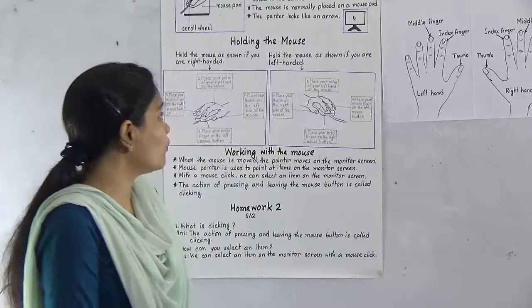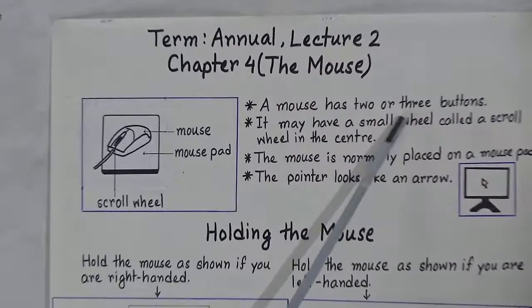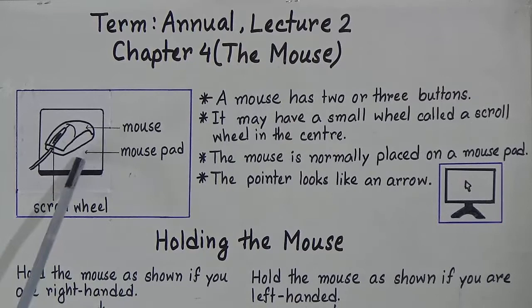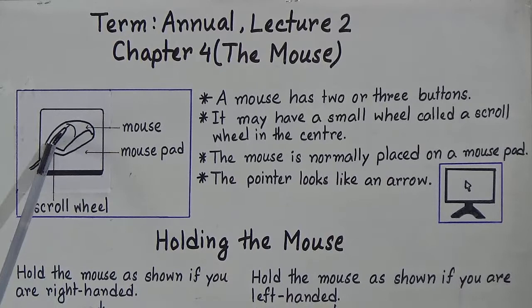A mouse has two or three small buttons. Now look at this picture of a mouse. We generally place a mouse on a mouse pad. You can also find a small wheel in the center of the mouse, which is called a scroll wheel.